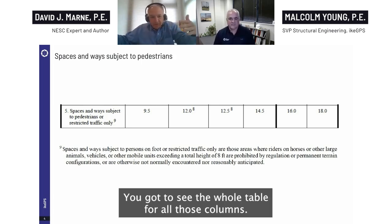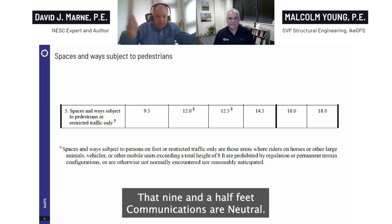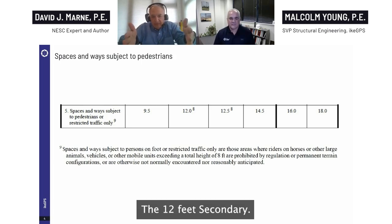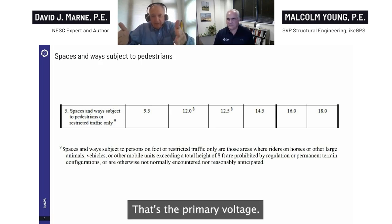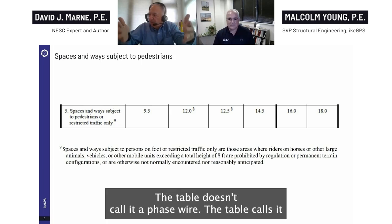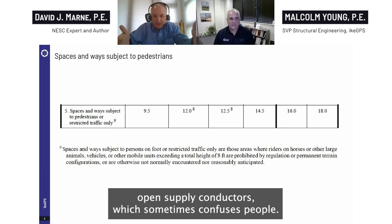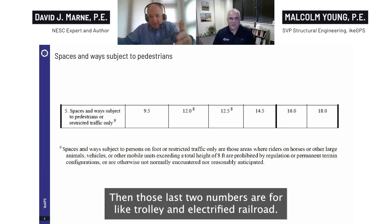You've got to see the whole table for all the columns. The 9.5 feet is for communications, the neutral is next, then 12 feet for secondary. Skip the 12.5 and go to 14.5 — that's the primary voltage for the phase wire, though the table calls it an 'open supply conductor,' which sometimes confuses people. Then the last two numbers are for trolley and electrified railroad.